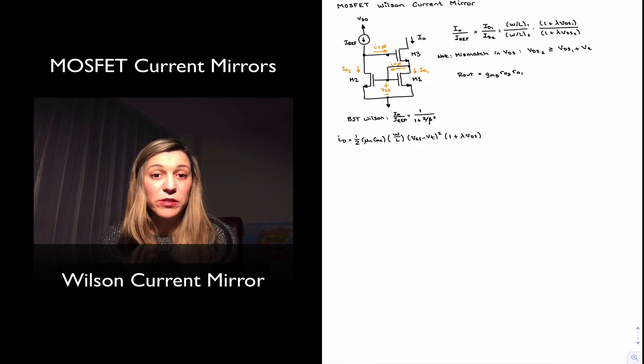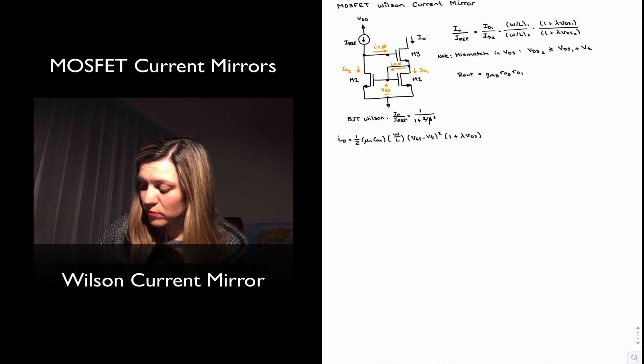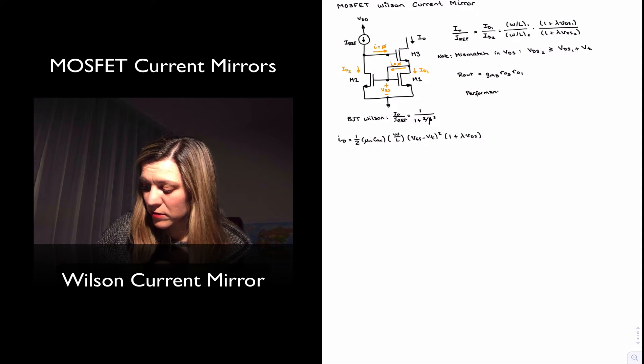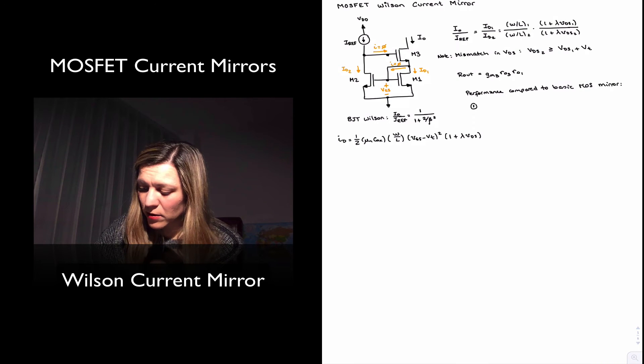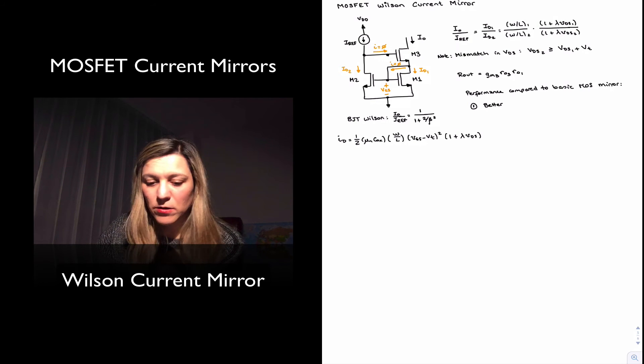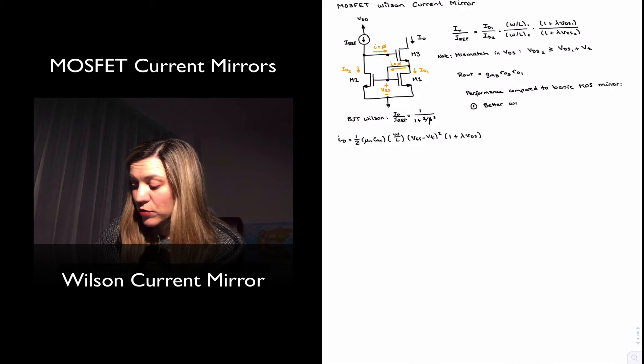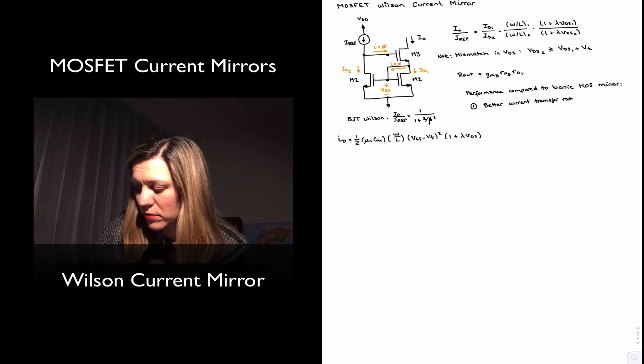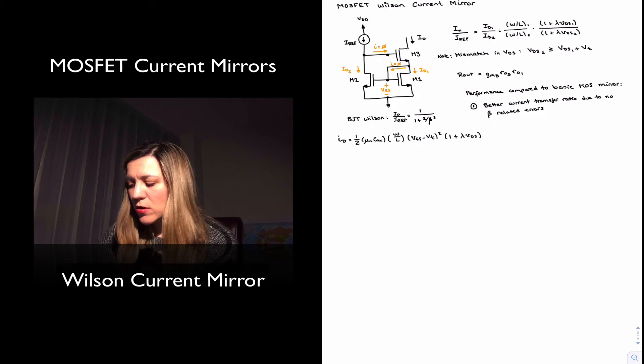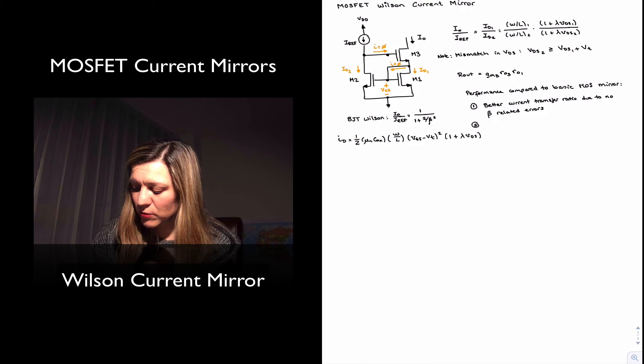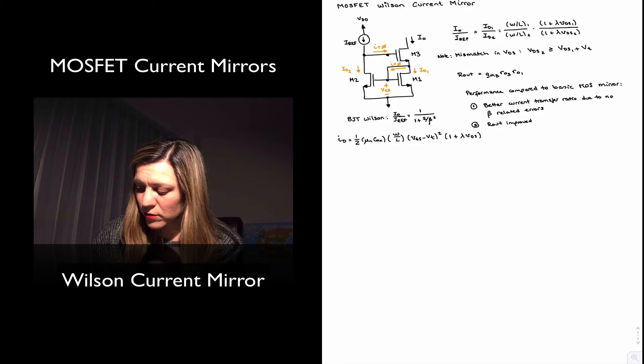So in terms of comparing the performance of this circuit to the basic current mirror, performance compared to basic mirror: one, better current transfer ratio, or more accurate current transfer ratio due to no beta related errors. That is the current into the gate of the transistor is equal to zero. And in terms of R_out, R_out improved by a factor of gm3 r_o3.